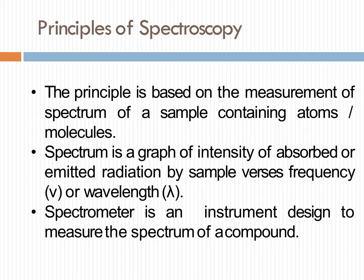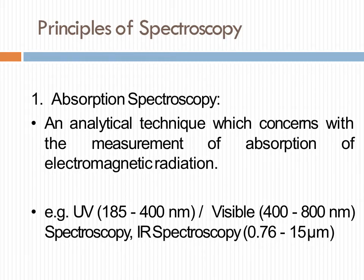Spectroscopy is divided into two parts. The first one is absorption spectroscopy, an analytical technique which concerns the measurement of absorption of electromagnetic radiation. If you have a compound which absorbs electromagnetic radiation, it is called absorption spectroscopy — for example UV (range 185–400 nm), visible (400–800 nm), and IR spectroscopy (0.76 to 15 µm).